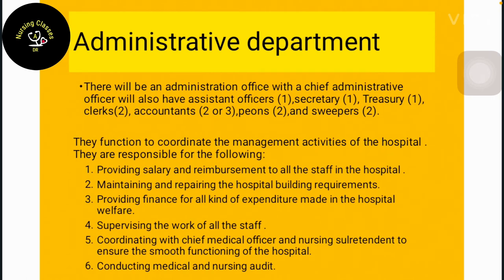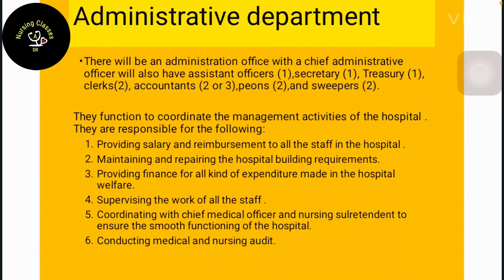The administrative department has a chief administrative officer and assistant officer. Staff includes one secretary, one officer, one treasury, one clerk, two accountants, two or three peons, and two sweepers. Their functions include: providing salary and reimbursement to all hospital staff; maintaining and repairing the hospital building; providing finances for all hospital expenditures; supervising the work of all staff; coordinating with the chief medical officer and nursing superintendent to ensure smooth functioning; and conducting medical and nursing audits.